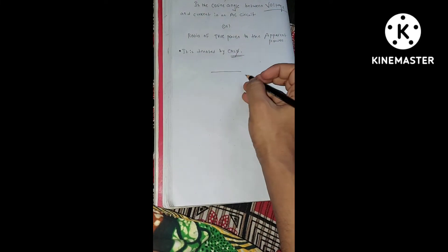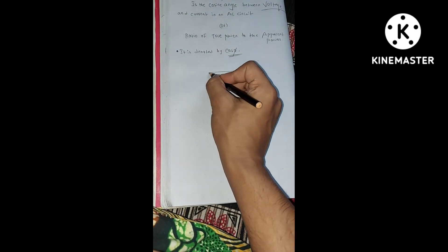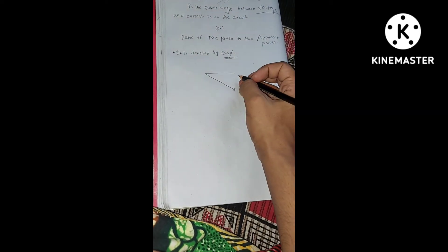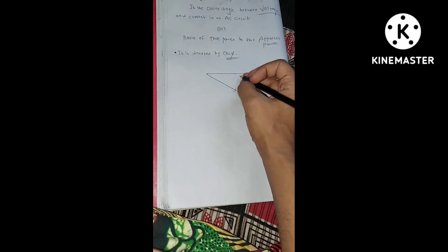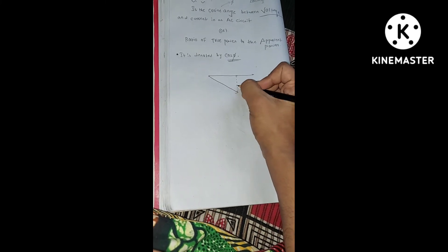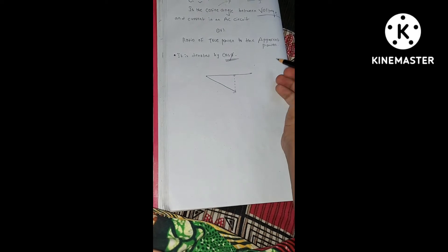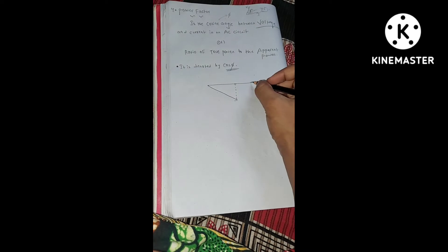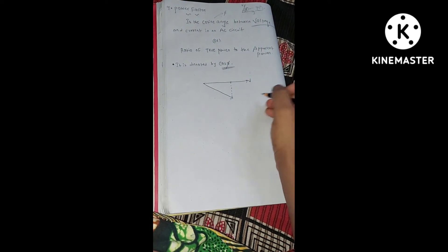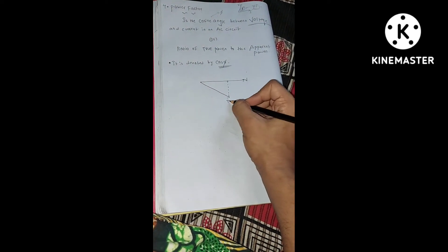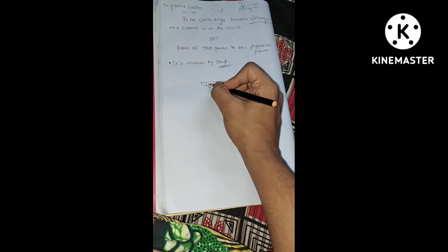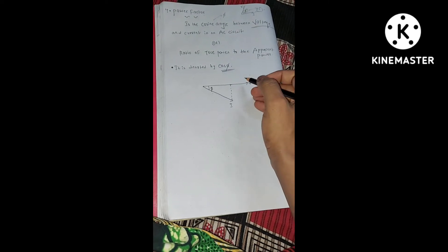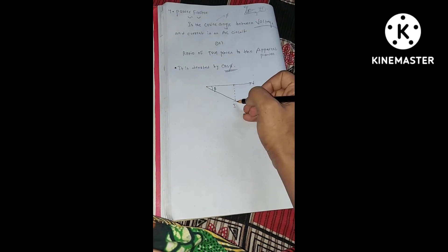To make a simple diagram: take one axis, take another axis along the z-axis, then drop a perpendicular. We discussed that power factor is the cosine angle between voltage and current, so we take voltage along one axis and current along another axis. The angle between them is your power factor.